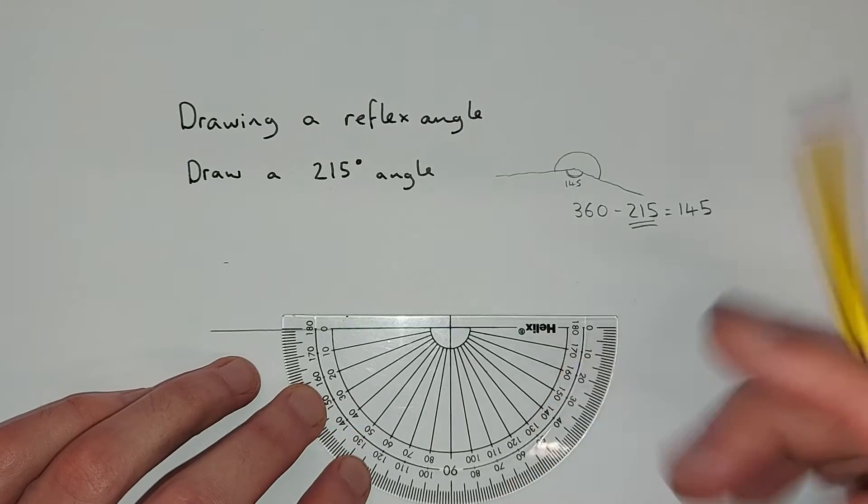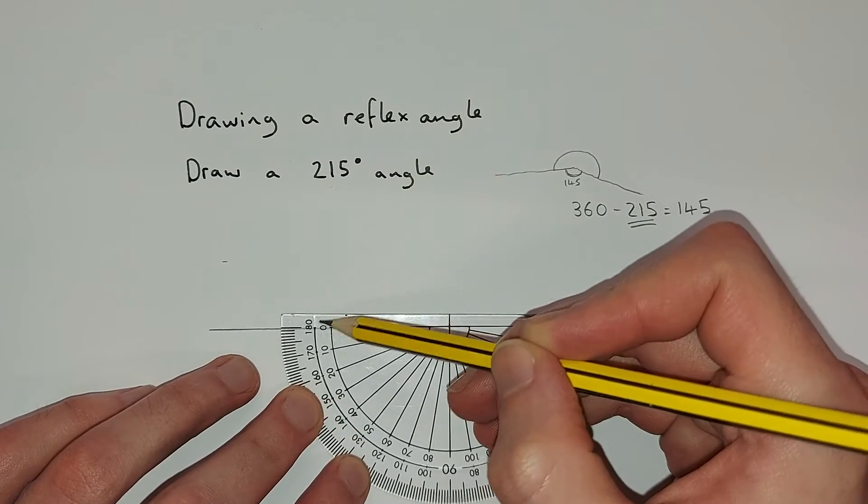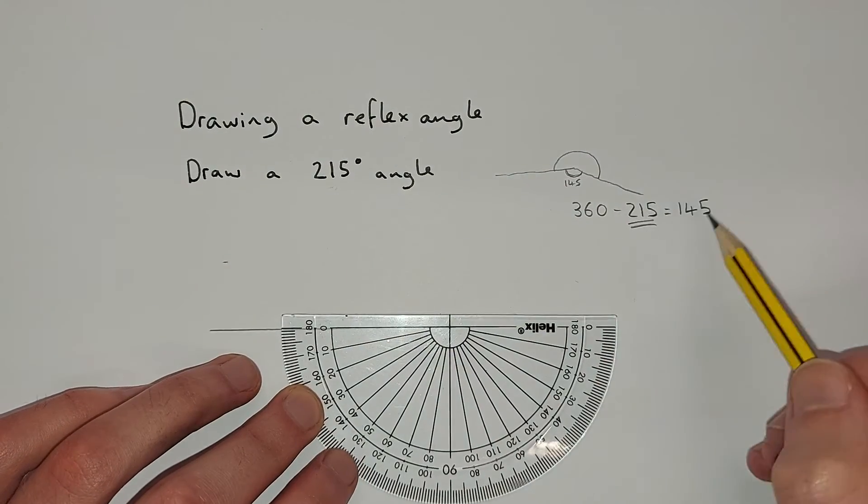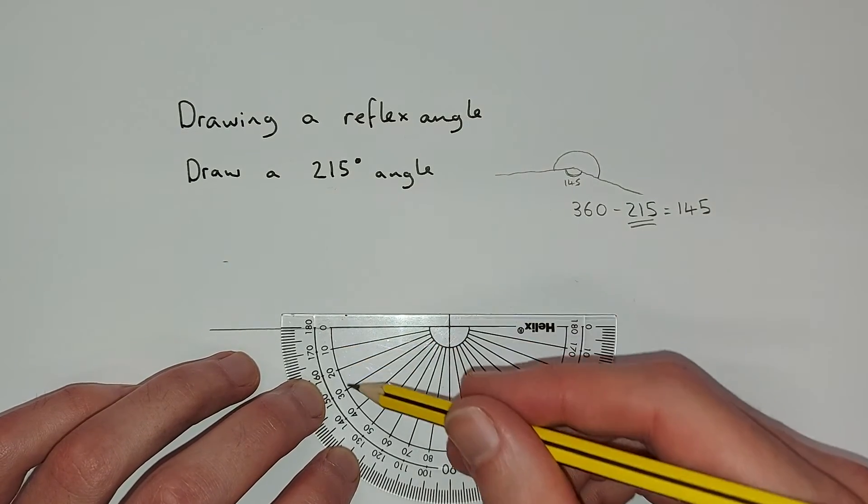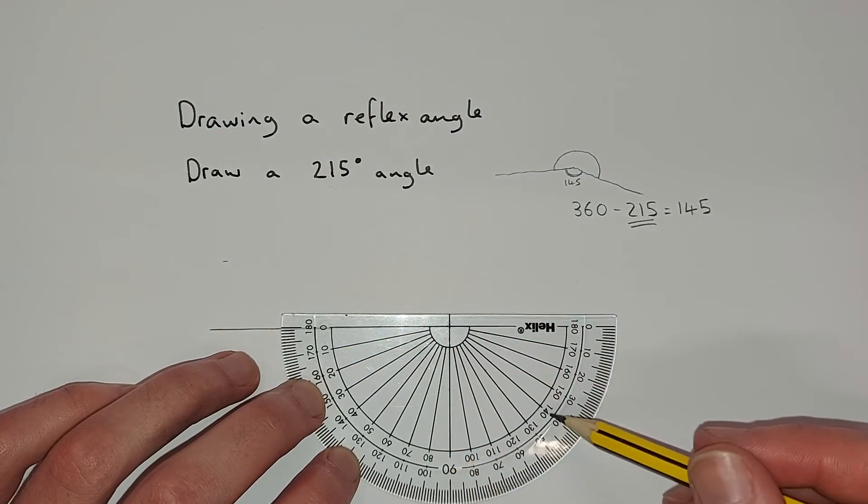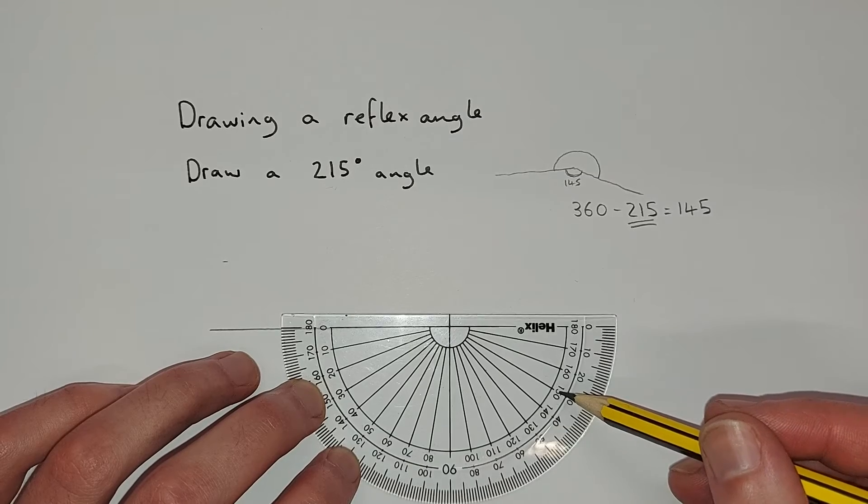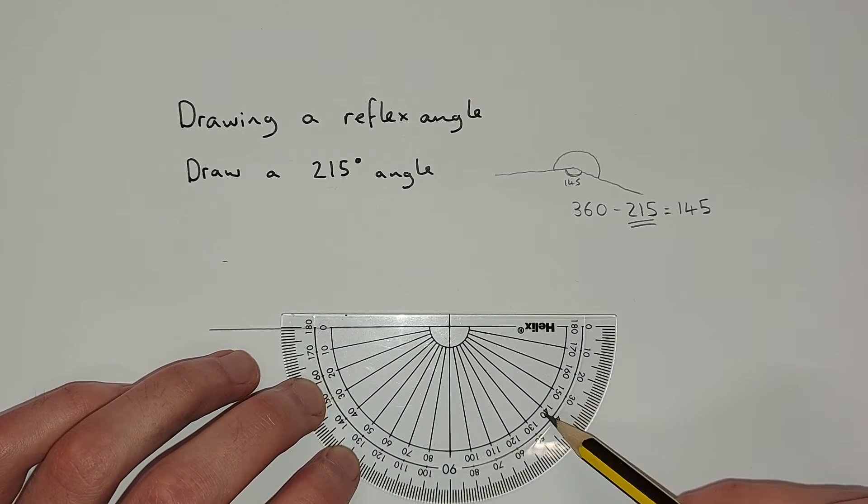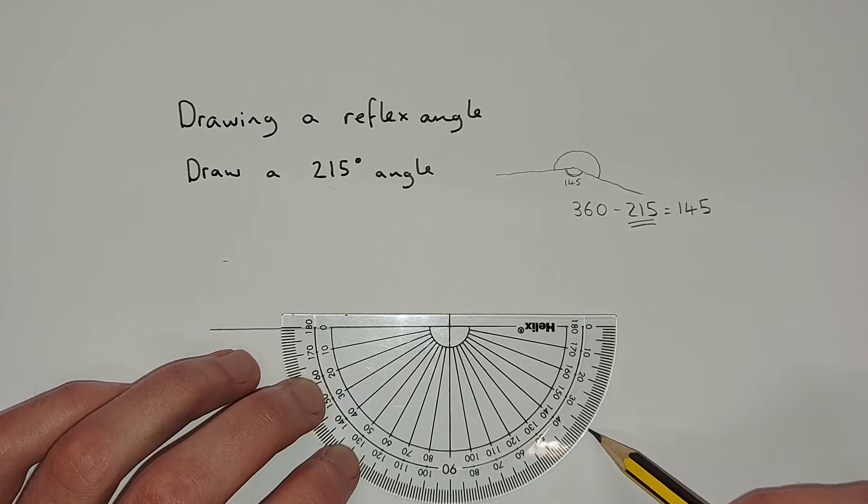So you can see here, we're going to start with zero. So we're starting on the inside here. We're going to measure 145 degrees. So 10, 110, 140, 150. So it's going to be halfway between these two. So halfway between these two is going to be here.